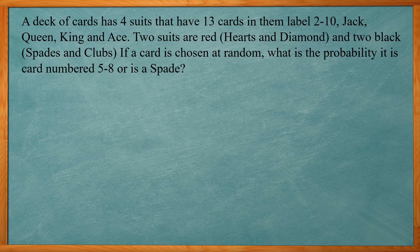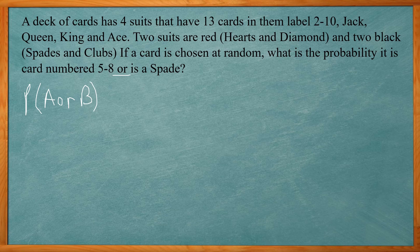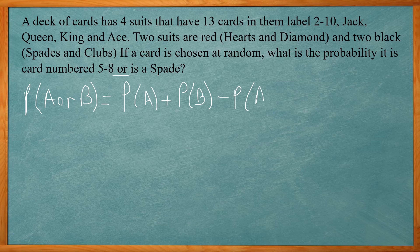A deck of cards has four suits with 13 cards each, labeled 2 through 10, jack, queen, king, and ace. Two suits are red (hearts and diamonds) and two are black (spades and clubs). If a card is chosen at random, what is the probability it is numbered five through eight or is a spade? When you hear the word 'or,' use the OR formula: P(A or B) = P(A) + P(B) − P(A and B).